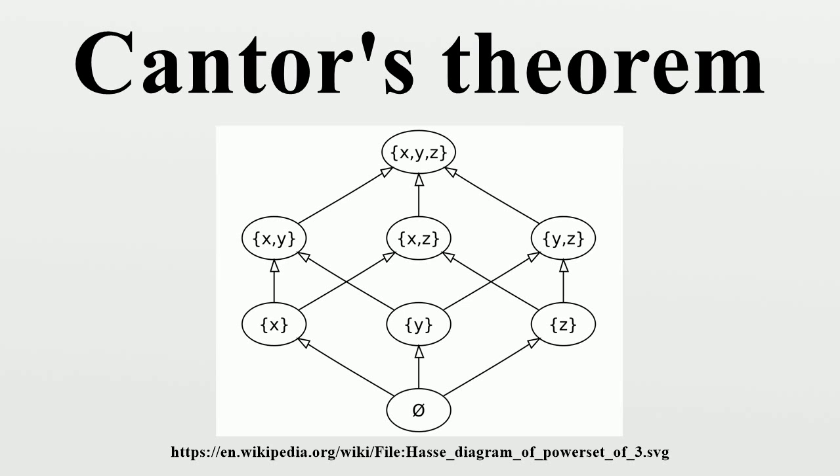Another way to think of the proof is that B, empty or non-empty, is always in the power set of A. For F to be onto, some element of A must map to B, but that leads to a contradiction.